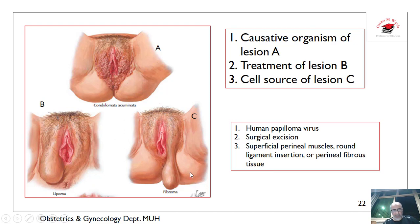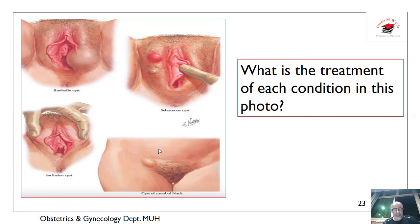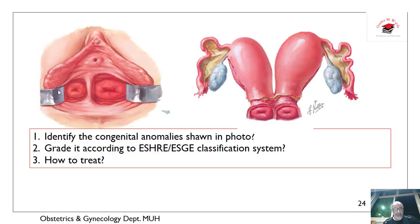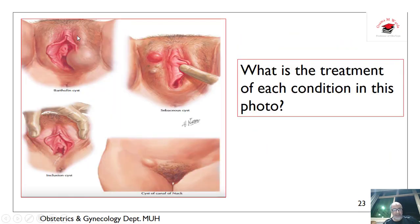This is a superficial perineal muscle round ligament fibroma that may arise from the superficial perineal muscle, round ligament, or perineal fibrous tissue. What about this? This is a Bartholin's cyst. Treatment: marsupialization for Bartholin's cyst, drainage for an abscess, excision for inclusion cyst, and excision with repair of fascial defects for cyst of the canal of Nuck.